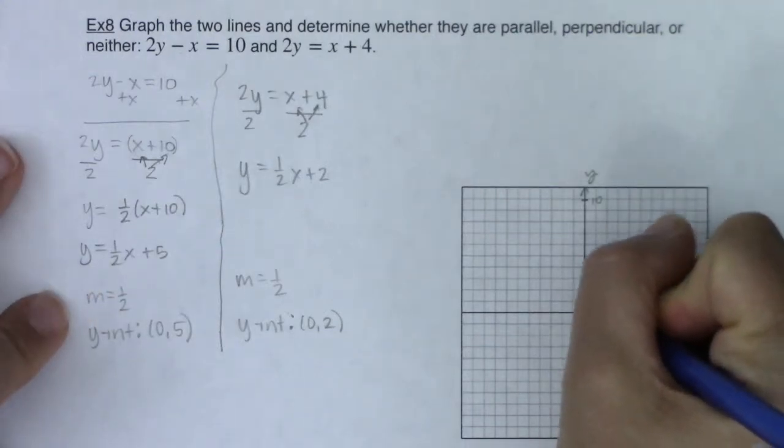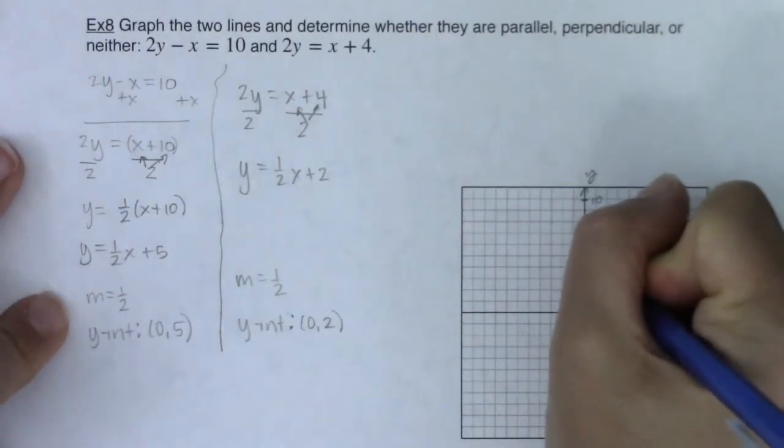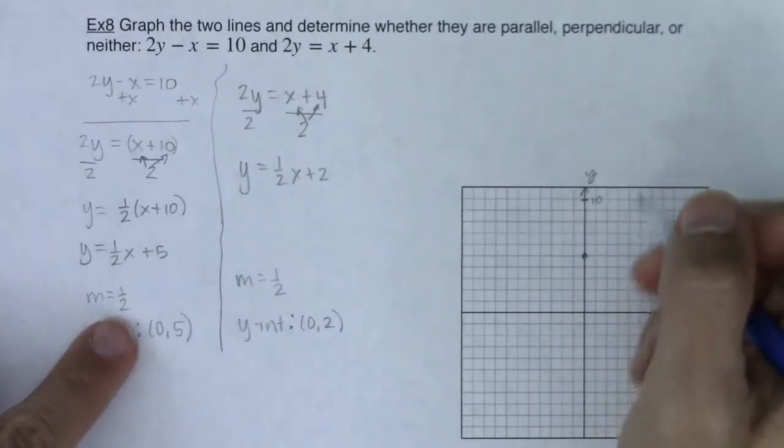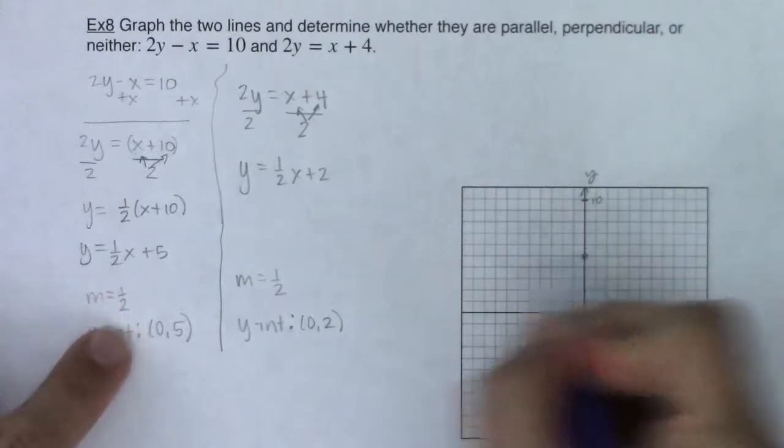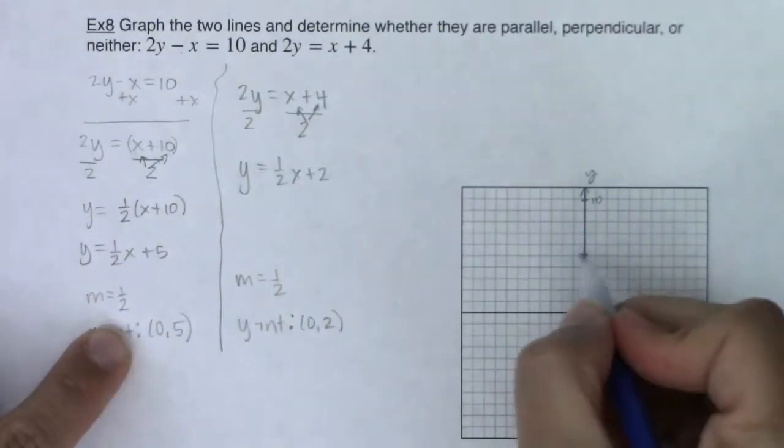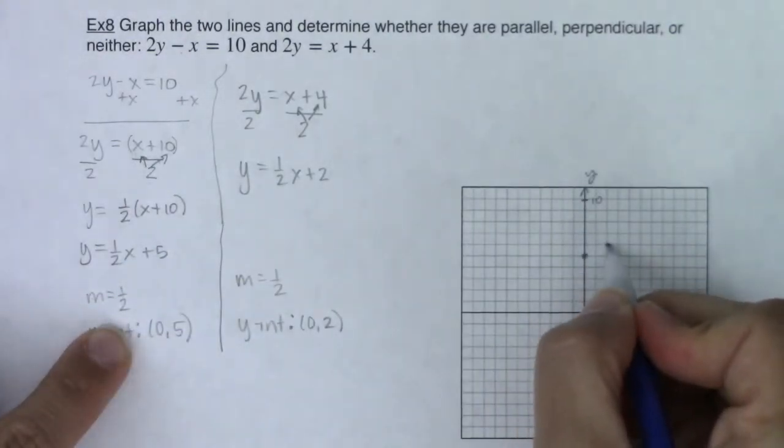So let me go up to 0, 5, 1, 2, 3, 4, 5. Now if the slope is one half, that means for every one unit I rise. So I'm going to go up positive 1 because this number is positive 1. And then I'm going to move to the right two units.